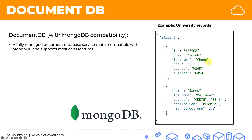Here we've got Sarah Chang with an ID, her age, the course she's taking, and that her tuition has been paid. And the second element, we've got James Matthews with an ID, a list of courses that James is taking, his application that is pending, and his high school GPA.